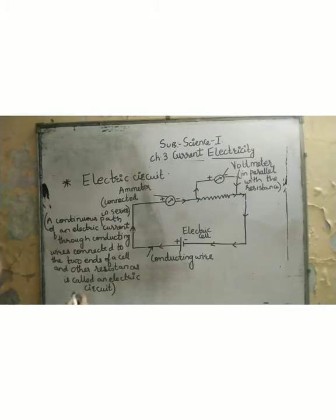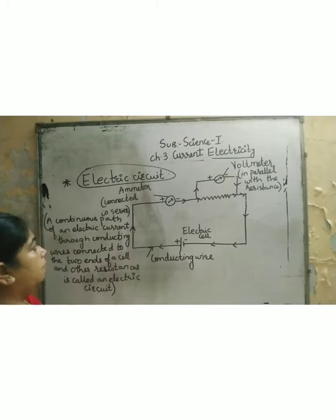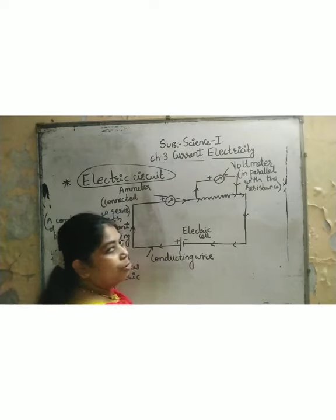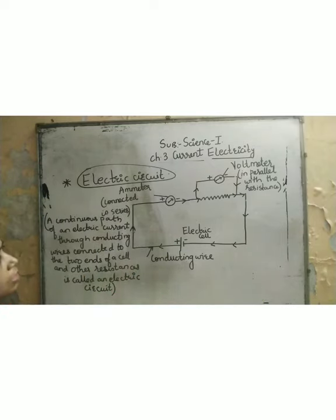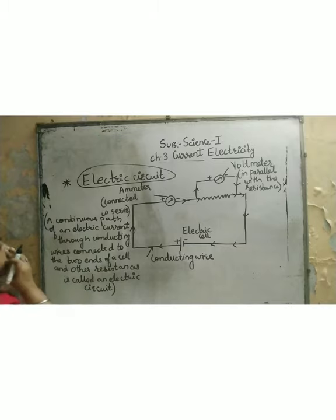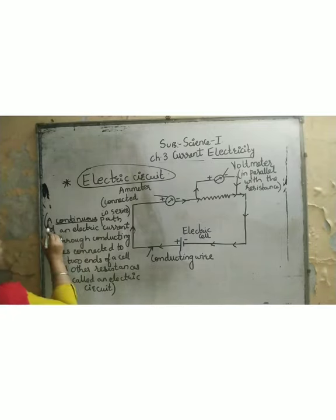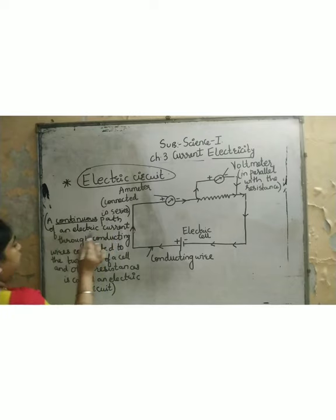Let us now move towards our next topic, which is a very important topic of this chapter: electric circuit. When we are learning about electricity, we should know how a circuit looks and what the symbols and things represented in the circuit are. Let us go through the definition first. A continuous path of an electric current through conducting wires connected to the two ends of a cell.